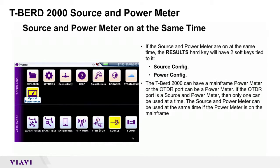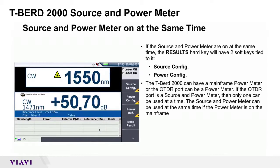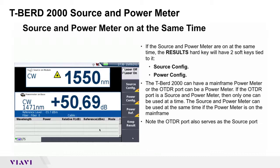The TBR2000 can have a mainframe power meter, or the OTDR port can serve as a power meter. If the OTDR port is both a source and power meter, then only one can be used at a time. The source and power meter can be used simultaneously if the power meter is on the mainframe. The OTDR port also serves as the source port.